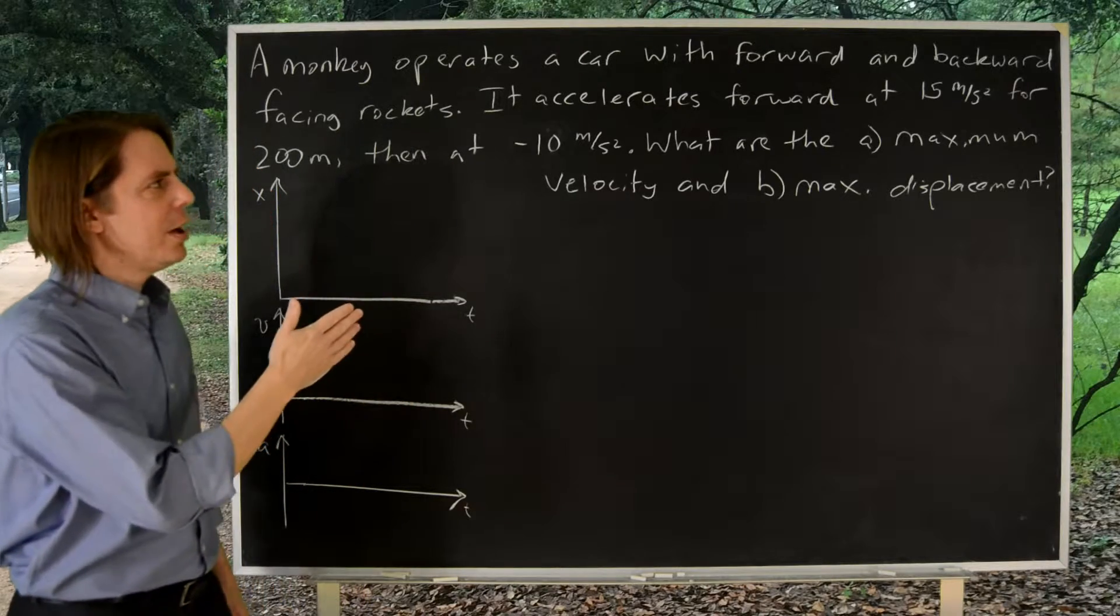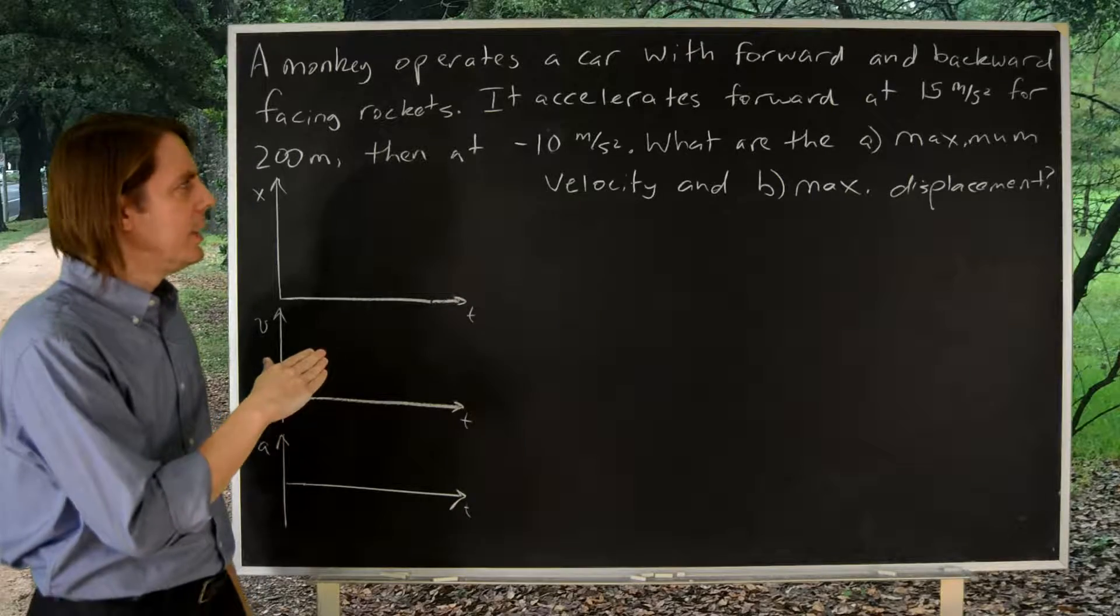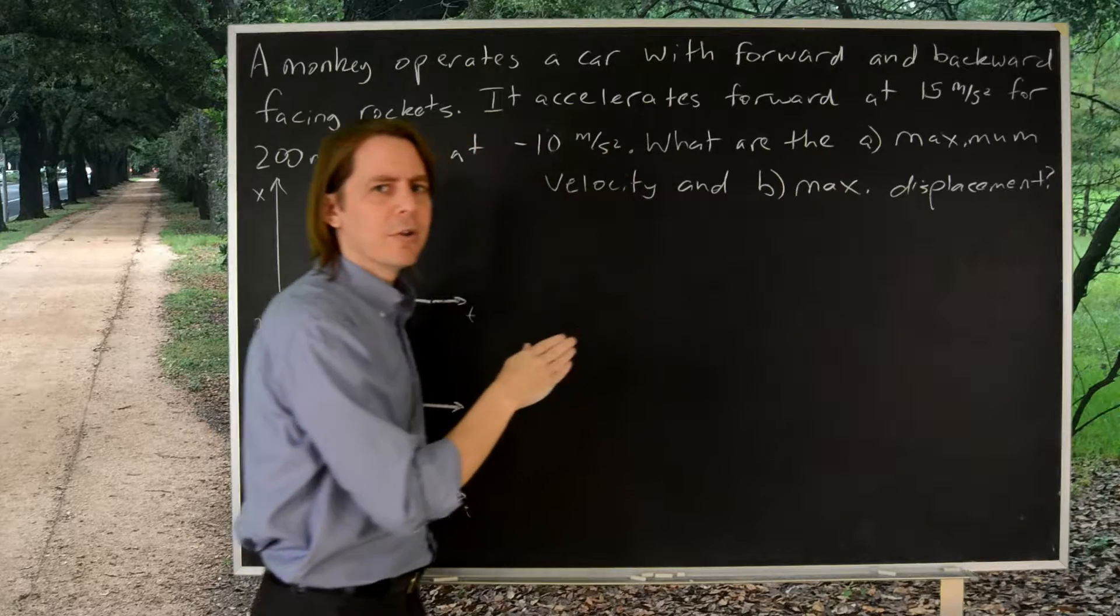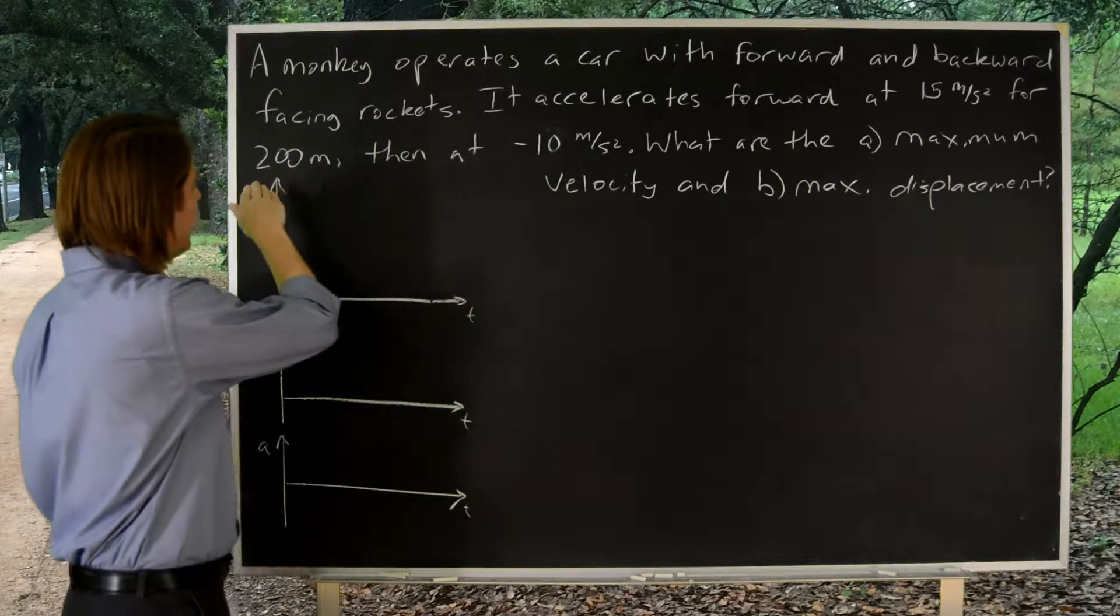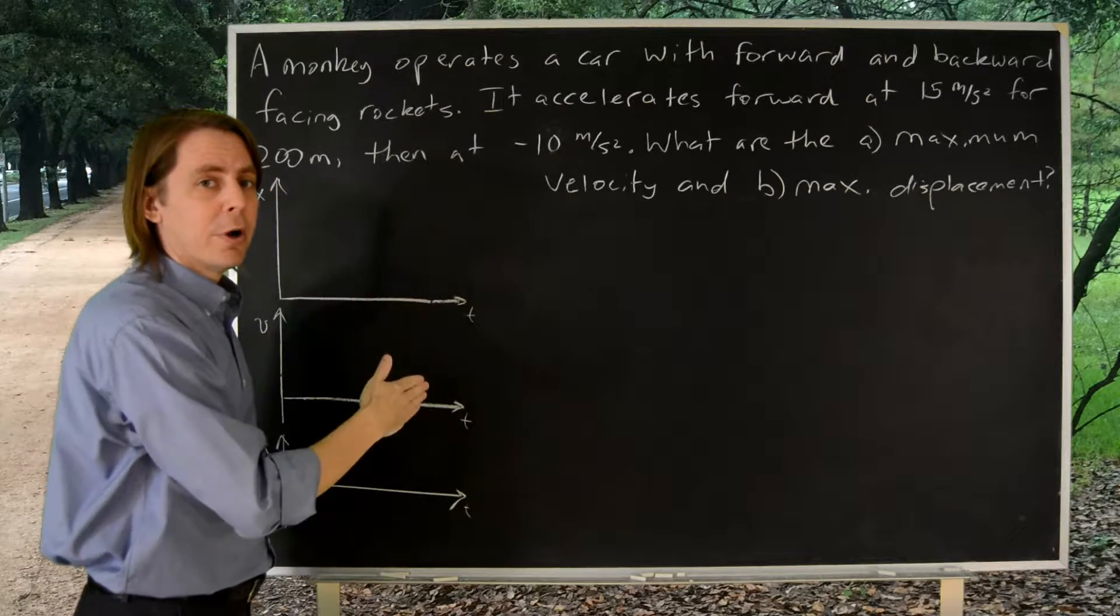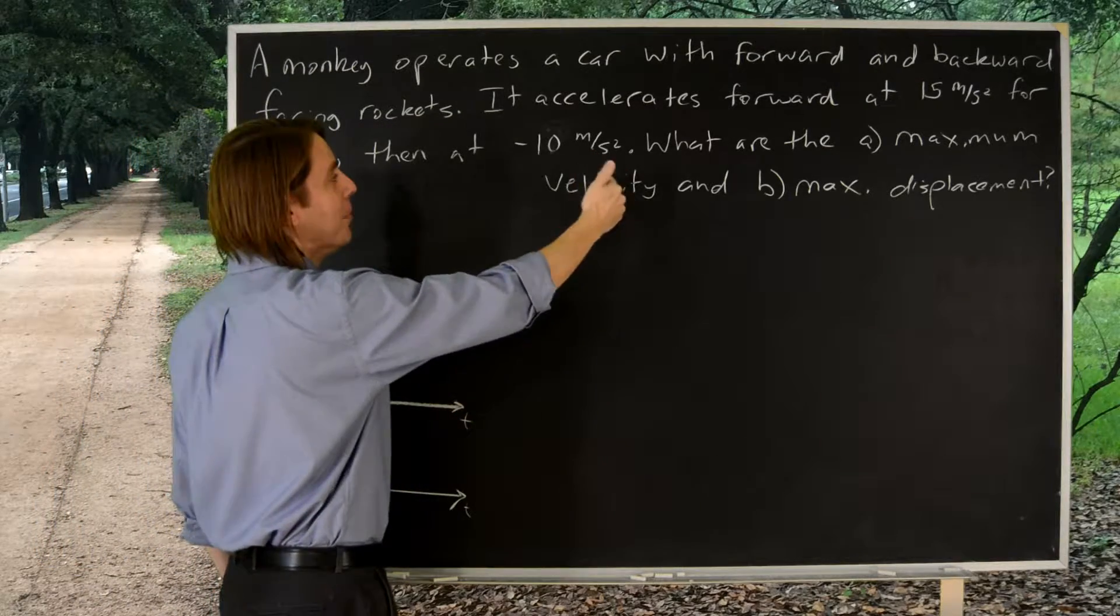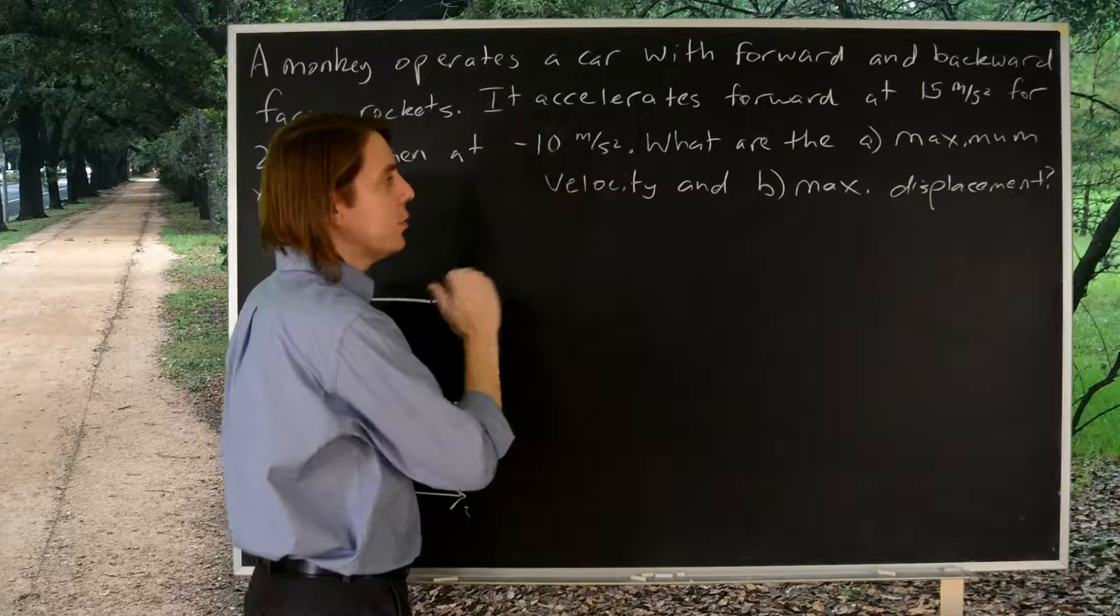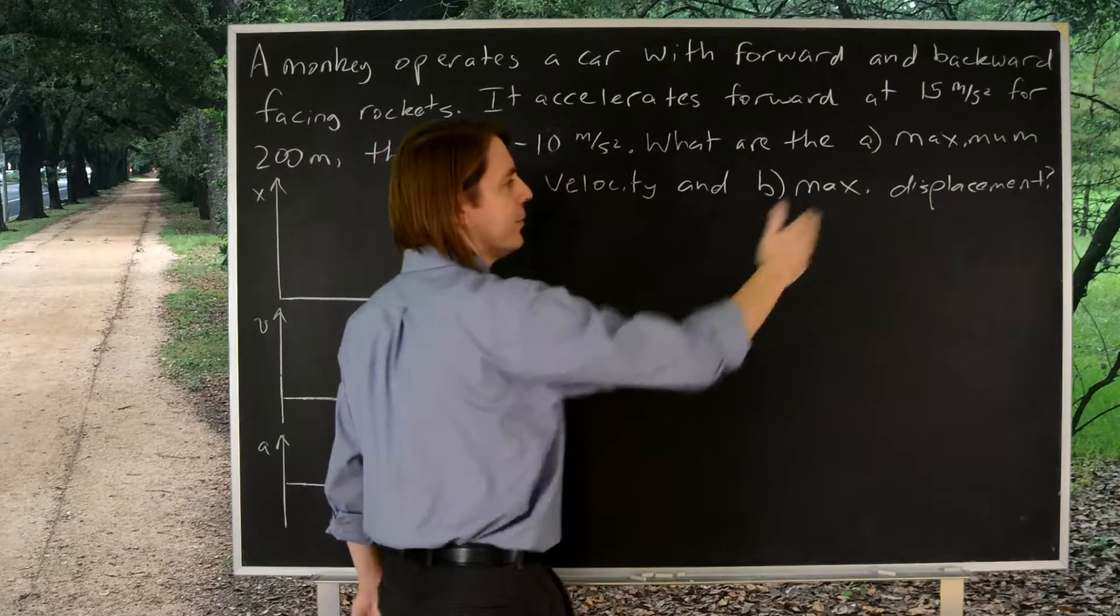In this problem we have a monkey operating a rocket car with both forward and reverse rockets. At first he turns on the forward rocket so that he and the car accelerate at 15 meters per second squared and does that while they travel 200 meters. Then he switches it, turns off the forward rocket, immediately turns on the reverse rocket so the acceleration reverses at minus 10 meters per second squared. The question is, what's the maximum velocity the car gets to and how far does the car go?